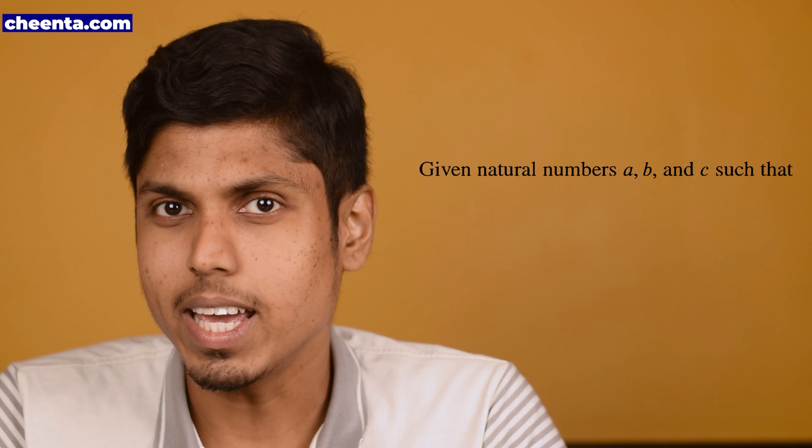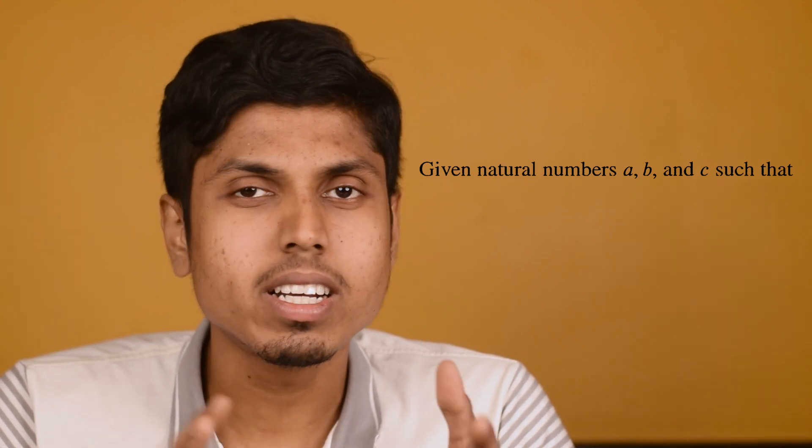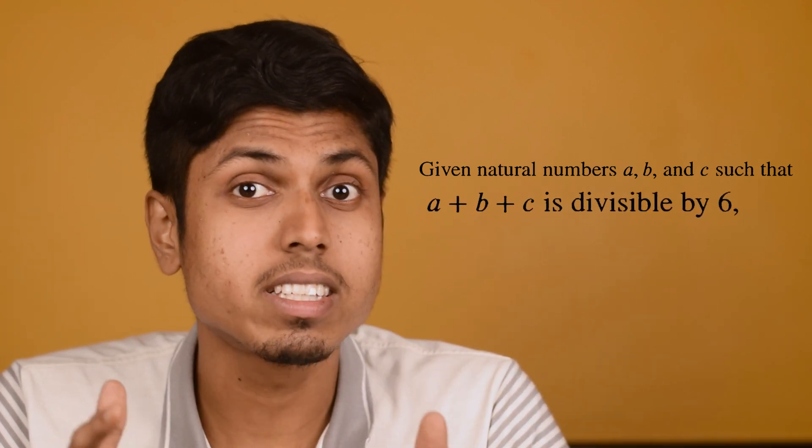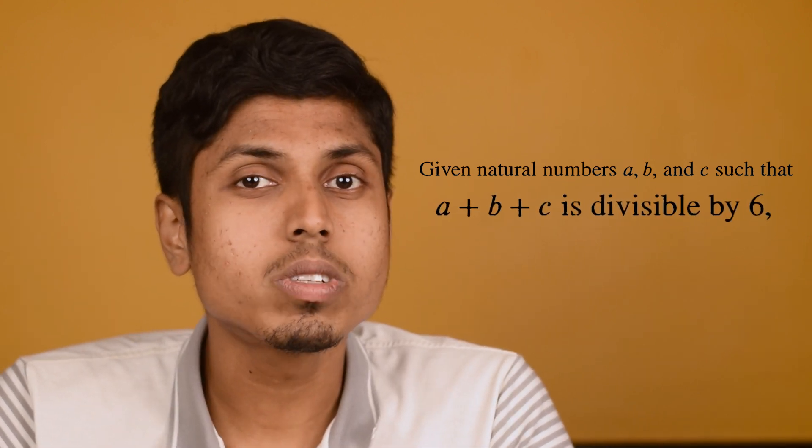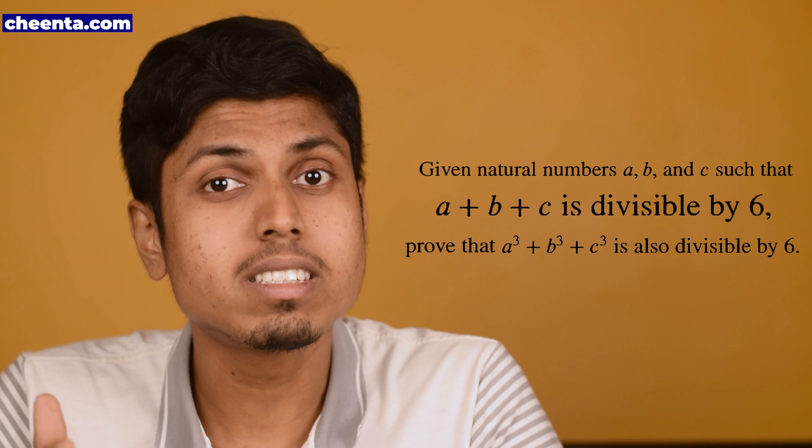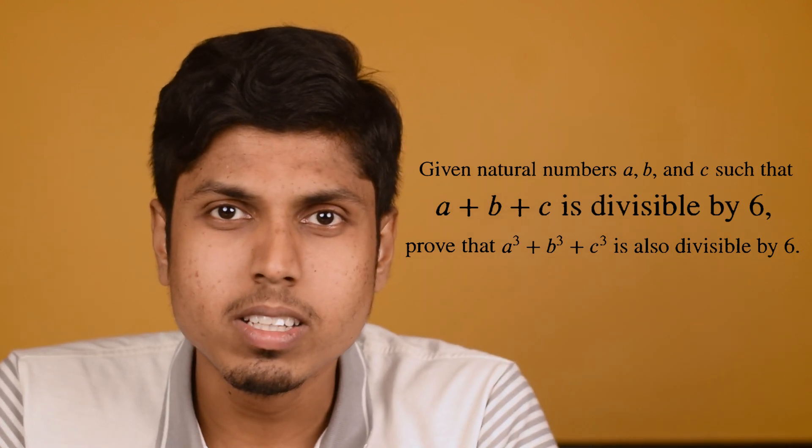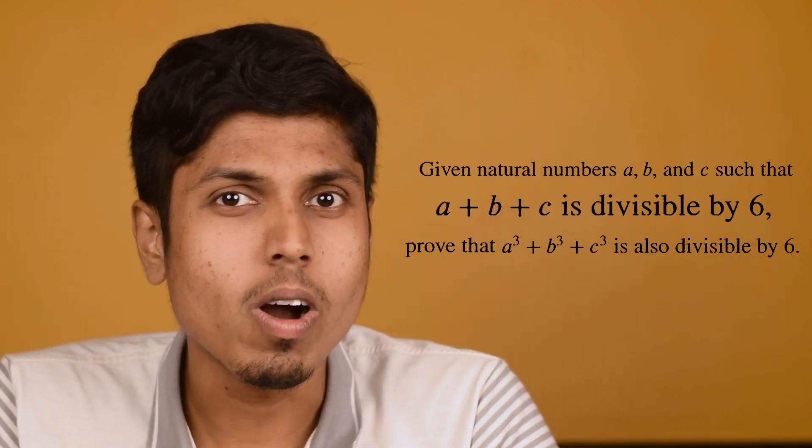Let's get started with the problem. It talks about three natural numbers A, B, C and the given condition is 6 divides A plus B plus C, and you are supposed to prove that 6 divides A cube plus B cube plus C cube. Several students who tried to tackle this problem were unsuccessful because they tried to cube this equation and were confused with the terms as there would be a lot of terms inside that. You can't handle with single terms in that expression. So let's see how this can be solved elegantly.